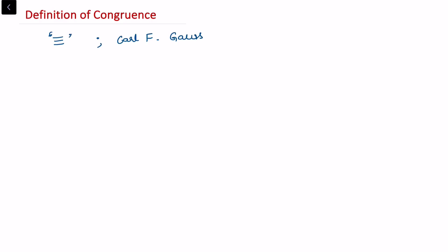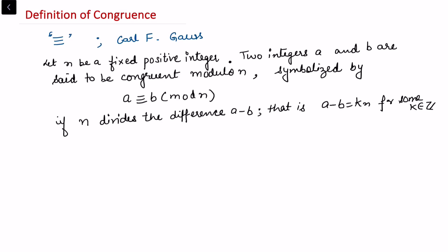Let n be a fixed positive integer. Two integers a and b are said to be congruent modulo n, denoted as a ≡ b (mod n), if n divides a minus b — or equivalently, a minus b equals k times n for some integer k.